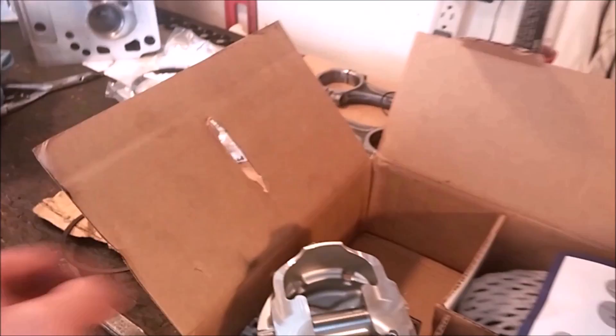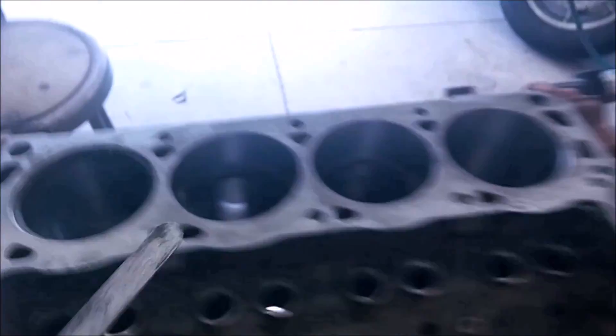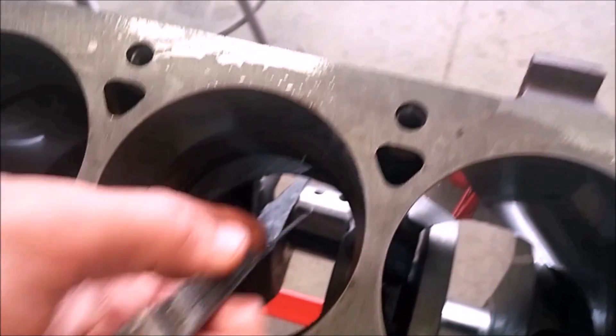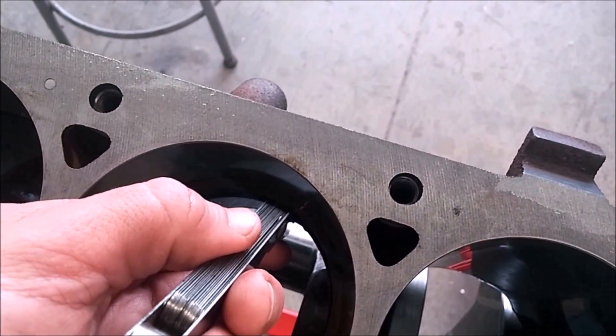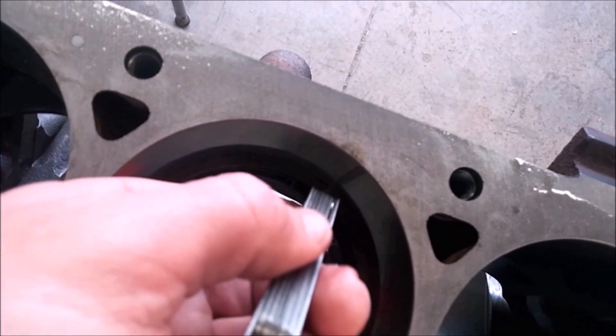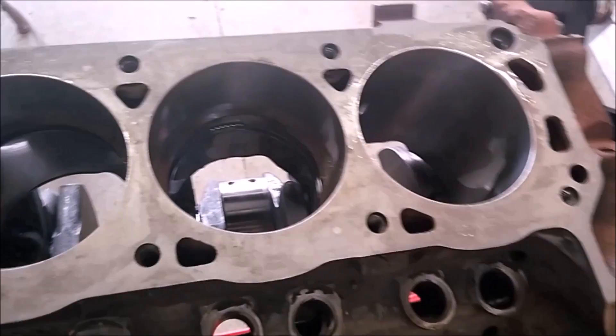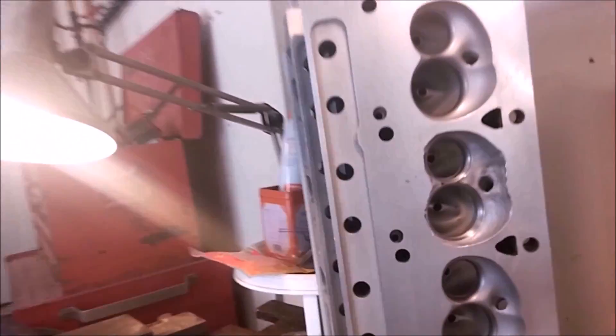Then use your feeler gauge like this to measure the gap. Now I've already set these, but I just want to show the process. You slide it in here, and it's a little dark down there, but I'm putting it between the ends of the ring, and then you will file the end of the rings to achieve that gap.